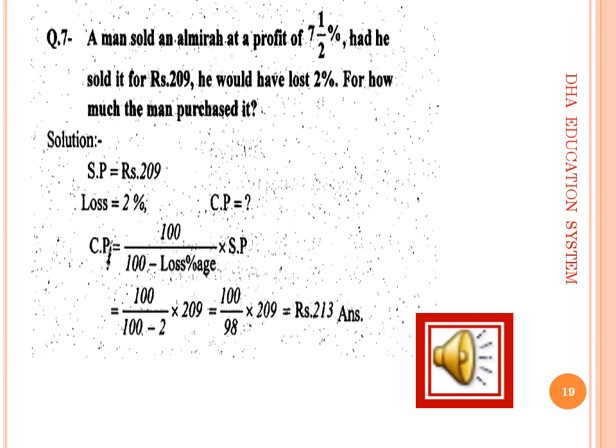Question 7: A man sold an almirah at a profit of 7 and a half percent; had he sold it for rupees 209, he would have lost 2 percent. Find the purchase price. Since the loss scenario gives SP = rupees 209 and loss percent = 2 percent, apply the CP formula: CP = 100 into SP over (100 minus loss percent) to find the cost price.